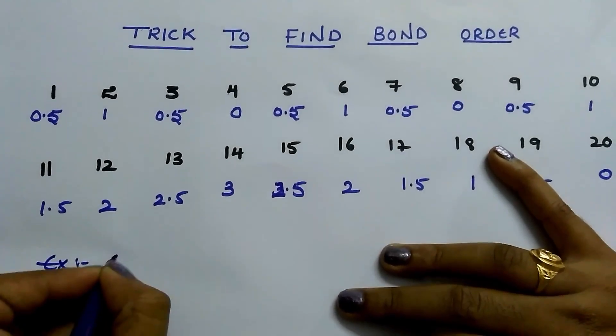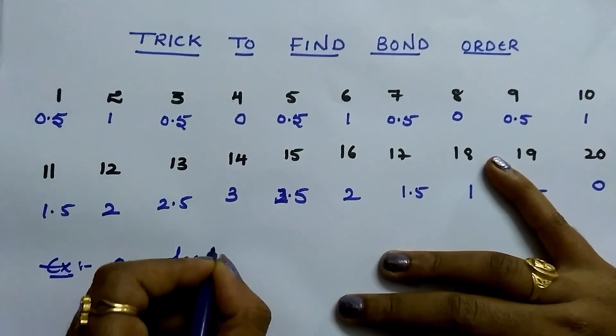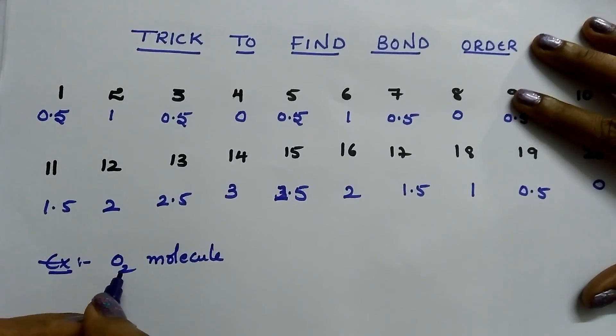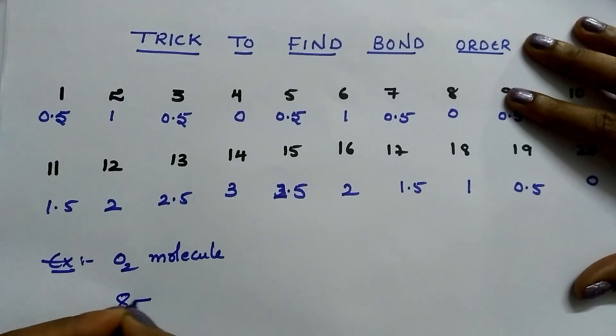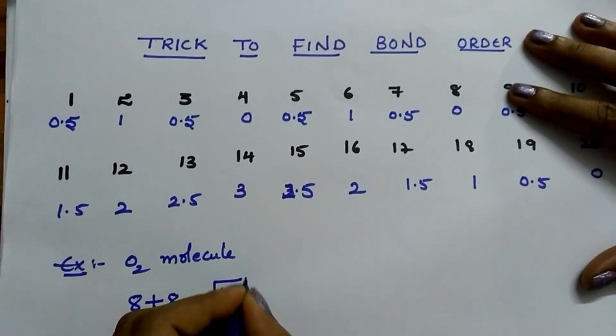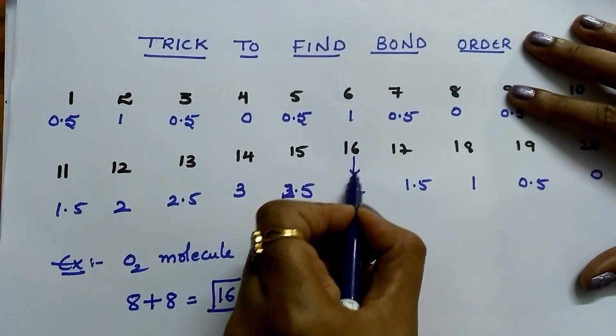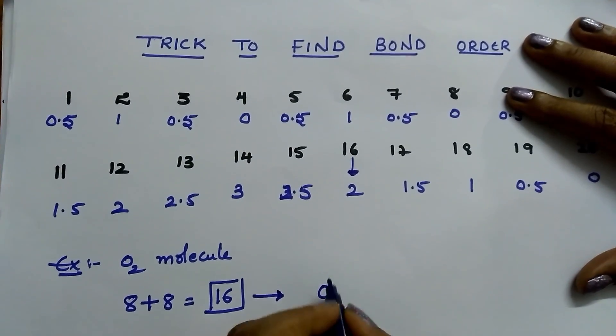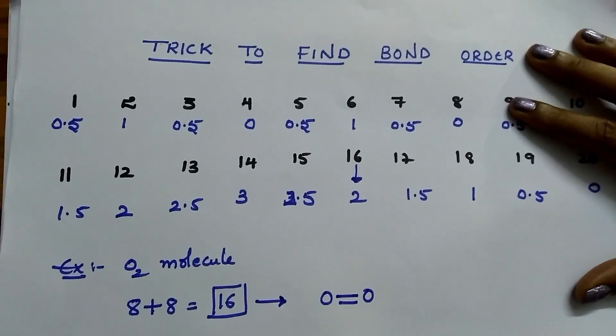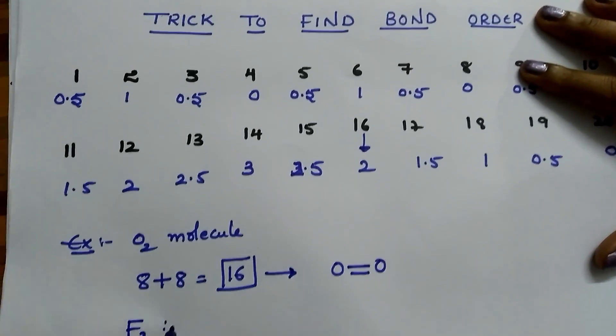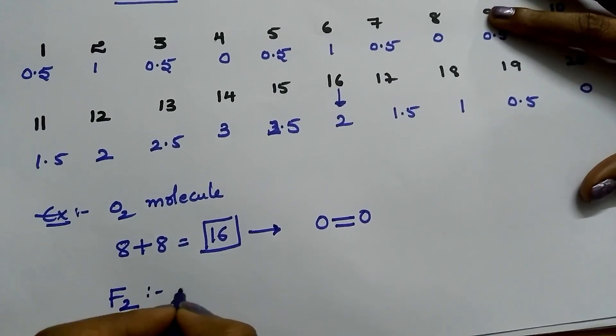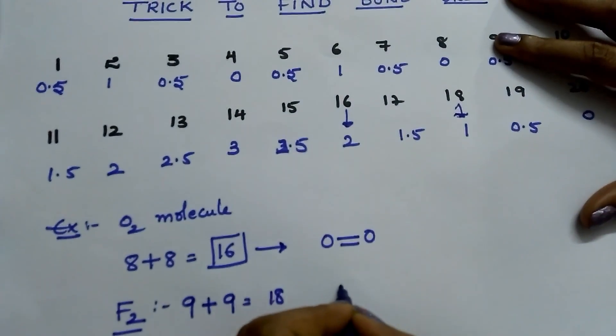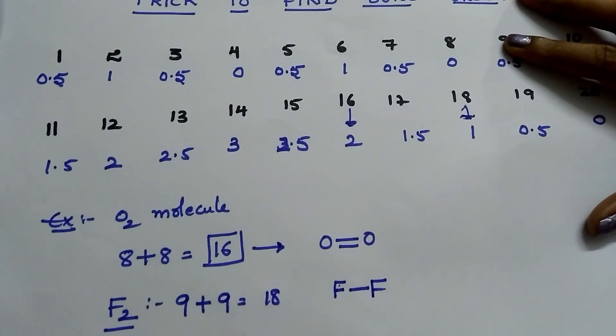Example: O2 molecule. Find the bond order for oxygen molecule. Oxygen atomic number is 8, which means it has 8 electrons. Two oxygens are there, so 8 plus 8 equals 16. Under 16, 2 is there, so its bond order is 2. Bond order is the number of bonds between two atoms. For F2 molecule, fluorine atomic number is 9. Two fluorines: 9 plus 9 equals 18. Under 18, 1 is there, so fluorine bond order is 1.